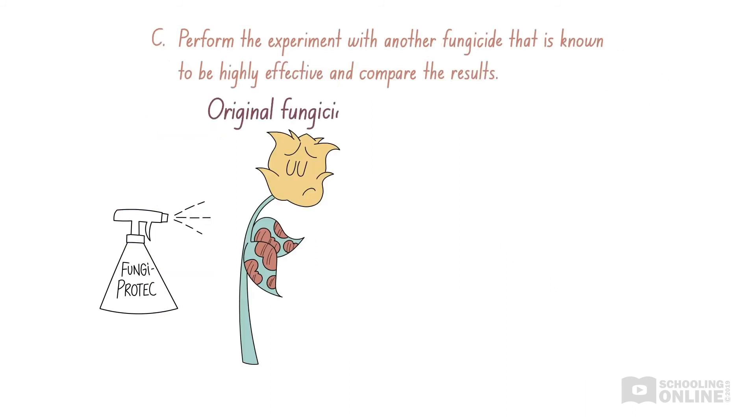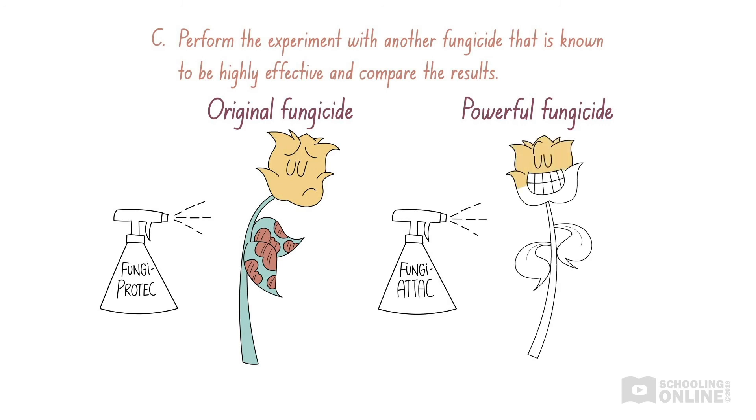Option C says that Dan should repeat the experiment using a different fungicide, which is already known to be highly effective in the treatment of rust disease. This fungicide completely clears plants of rust disease in a short amount of time. When the results of the two experiments are compared, we will be able to judge the effectiveness of the new fungicide.